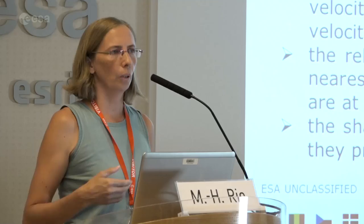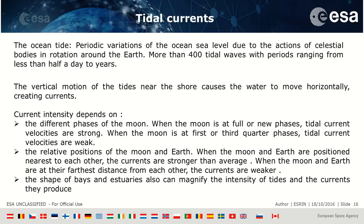Tidal currents arise from periodic variation of ocean sea level due to the action of celestial bodies in rotation around the Earth. There are more than 400 tidal waves with periods ranging from less than half a day to years. Tidal current intensity depends on the phases of the Moon — stronger at full or new phases, weaker at first or third quarter — the relative position of Moon and Earth, and the shape of coastlines, which can magnify tidal intensity in bays or estuaries.